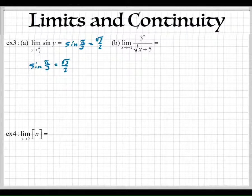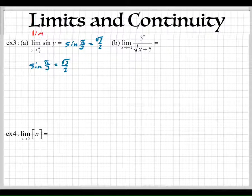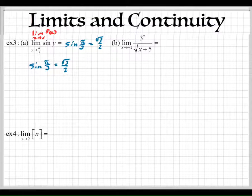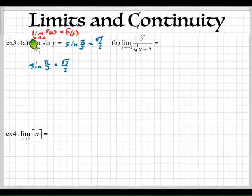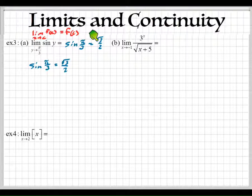That's what we've been trying to say all along: if you're taking the limit of f(x) as x approaches c and the function is continuous, then you can just take c and plug it in to get your answer. That's what we just did — we took c and plugged it in and got our answer.